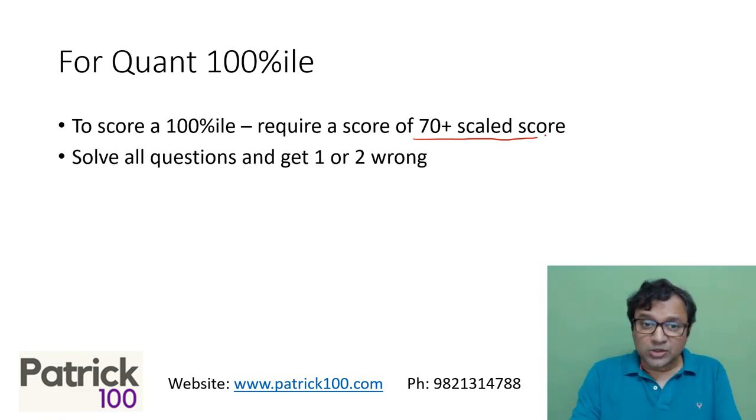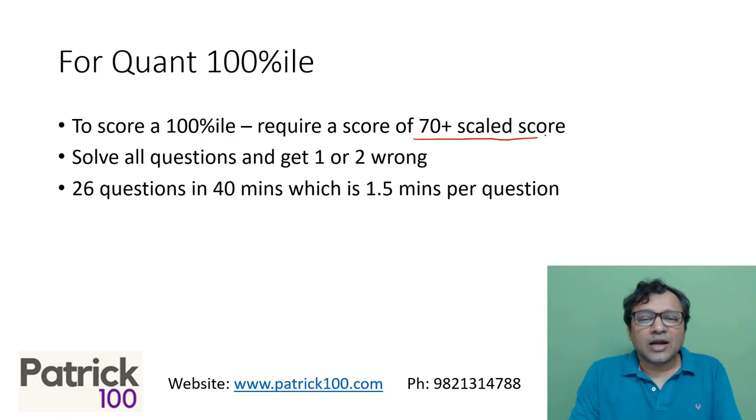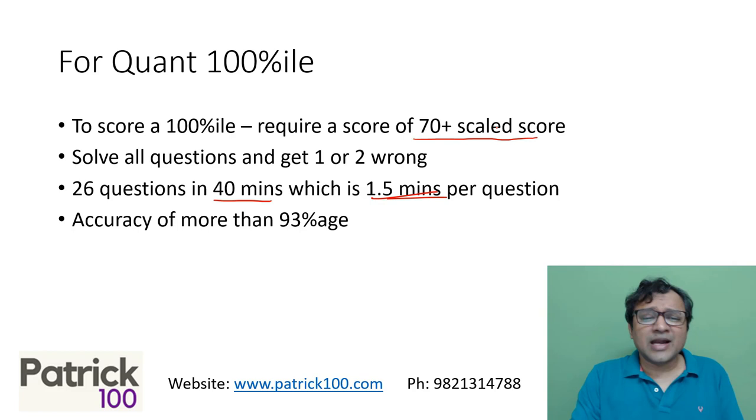So ideally, solve all the questions and maybe get one or two wrong, or maybe try to focus on accuracy and try to get that 20, 21, whatever question is correct as far as possible. 26 questions in 40 minutes is approximately 1.5 minutes per question. So that means I need to solve all questions in this time of 1.5 minutes per question on an average, with an average accuracy of more than 93%. That is how you need to solve the QUANT paper.